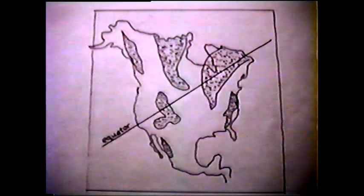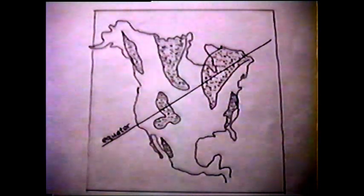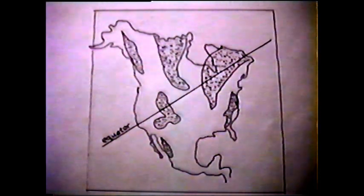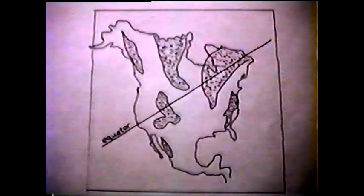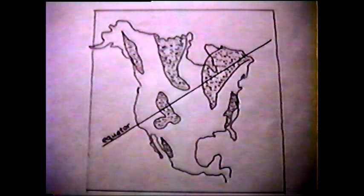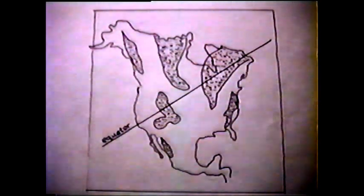Before the Ice Age, the region of North America now occupied by the Great Lakes was a plain that contained several broad river valleys. The geology of the region was determined in part by the existence of extensive inland seas during the Silurian period, about 500 million years ago. At that time, what is now North America was straddling the equator. The inland sea that covered this portion of North America created a bowl-shaped basin.